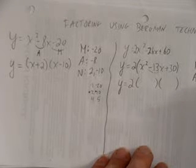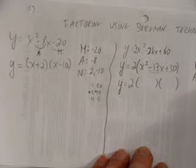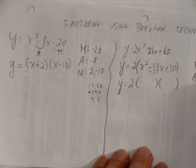And now I just need to check my numbers. Negative 1 times negative 30 works for multiply but adds to negative 31. That's no good. Negative 2 times negative 15 multiplies to 30, but it adds to negative 17. That's no good.